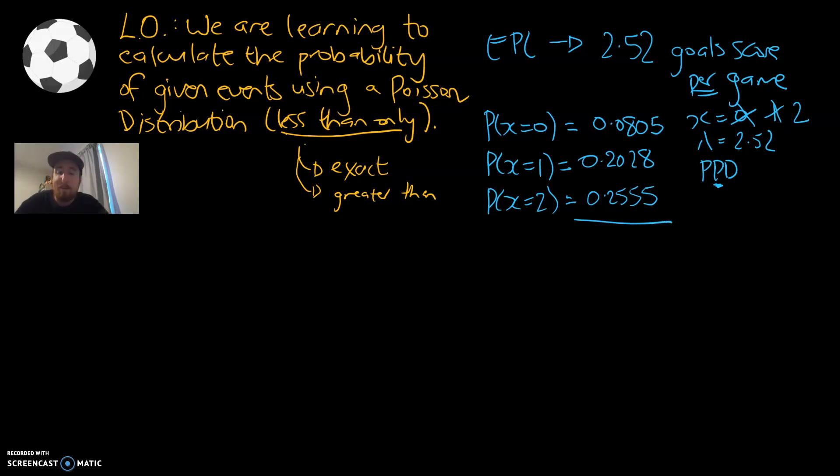If we add up the probability of all of these: 0.0805 plus 0.2028 plus 0.2555, that comes to 0.5388. That's an interesting number. That would be the probability of there being zero, one, or two goals in that Aston Villa game. But it was a bit annoying to calculate the probability of zero, then one, then two, and then adding them all together.